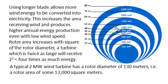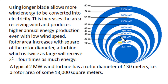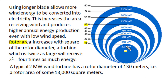Use of longer blades on a turbine allows more sweeping area of turbine blade rotation, enabling more wind energy to be converted into electrical output. A higher sweep area can produce higher annual energy production even with low wind speeds. Rotor area increases as the square of rotor diameter — so if we double the rotor diameter, the electrical output becomes four times.